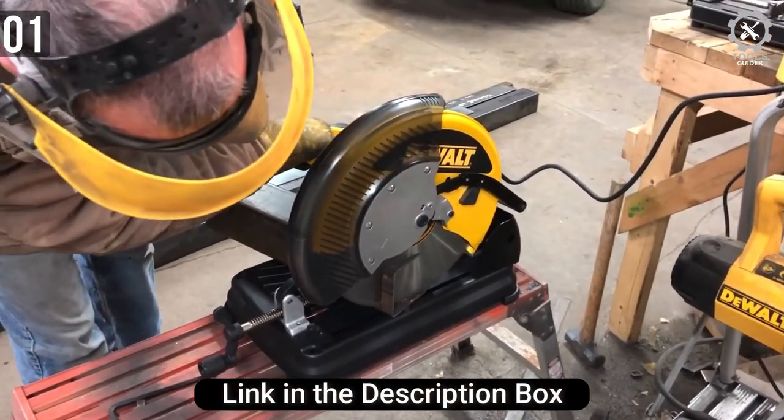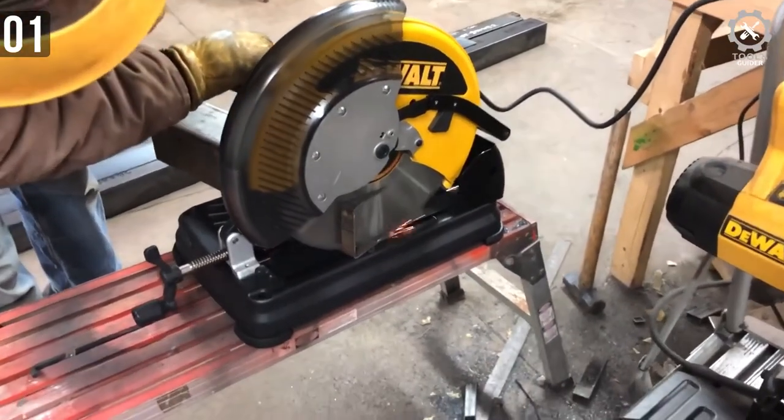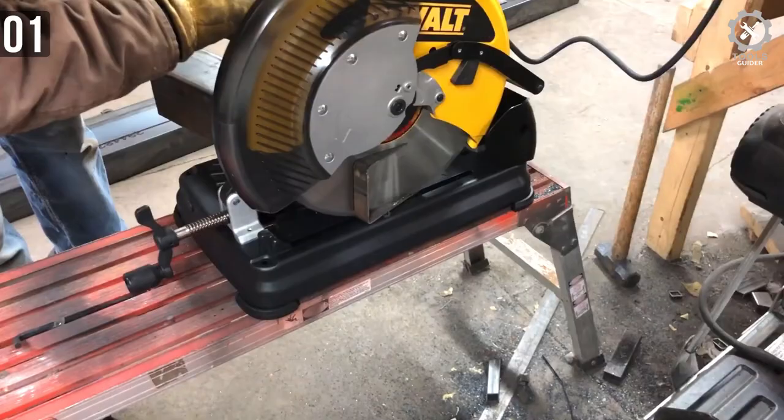The DeWalt D-872 Chop Saw for Metal Cutting has a 14-inch chop saw for metal cutting. It cuts deeper and faster than any other saw.